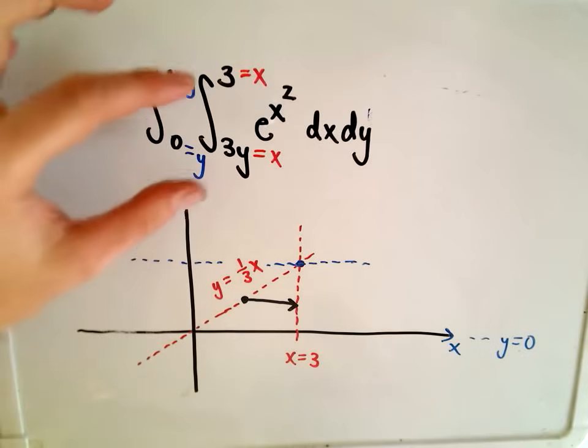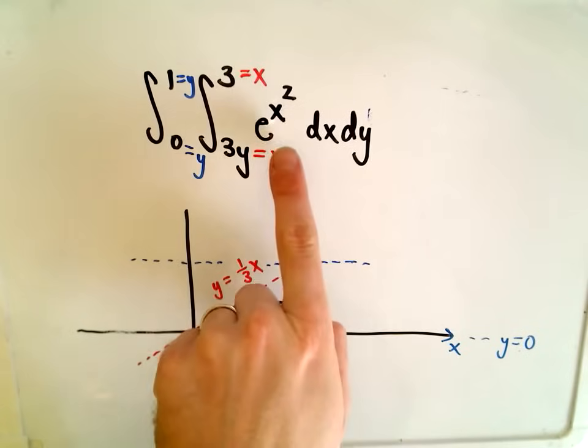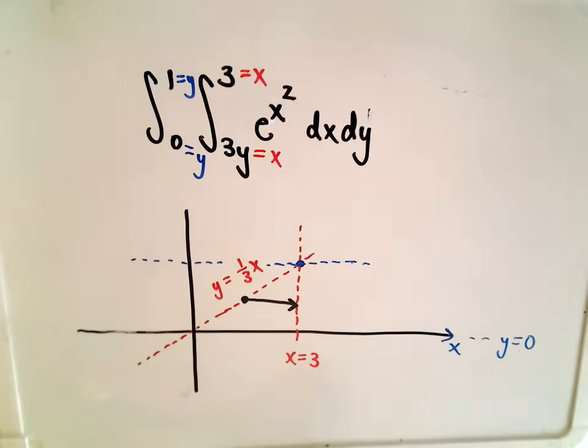Okay. If you could integrate this straightforward, by all means do it. But the problem is e to the x-squared doesn't have an antiderivative with respect to x. So that's why you would have to go through this whole process that we are now doing. Okay, so let's see if we can't switch them out.